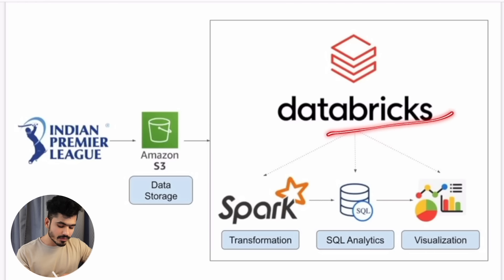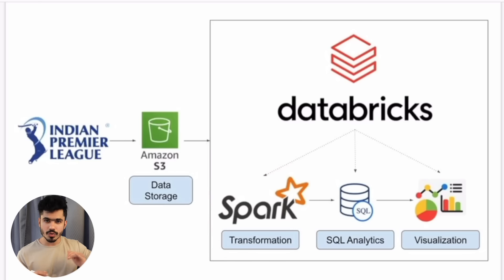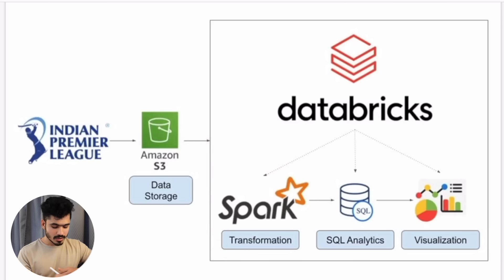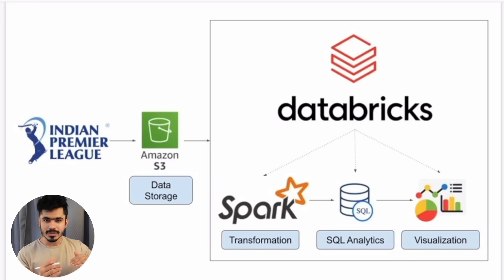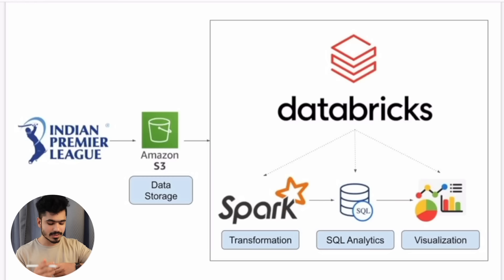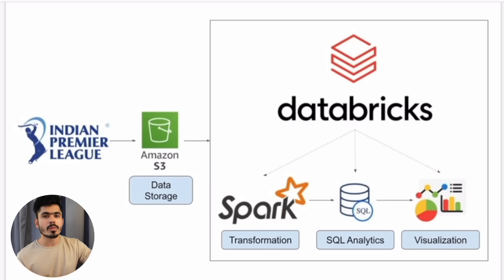Once you do that, we will use the Databricks workspace. First, we will use Apache Spark to write the transformation code. We will read this data using Spark code, then apply transformation with some business logic on top of it. After that, we will do SQL analytics — write some SQL queries, join some tables to understand the trends of the IPL dataset, and try to find some insights. Once we find the insights, we will do the final visualizations on top of it.